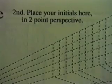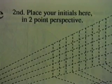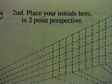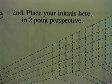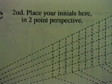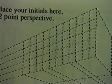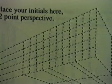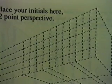After you have totally completed the bottom part, the art, you may then go to the top where it says second. Place your initials here in two-point perspective, and you are given a three-column, five-row grid to place your letters in distortion using the vanishing points, and then you're going to carry them back in two-point perspective.